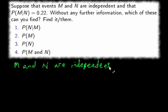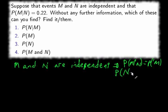Independent means that the probability of M given N equals the probability of M, and the probability of N given M is the probability of N.